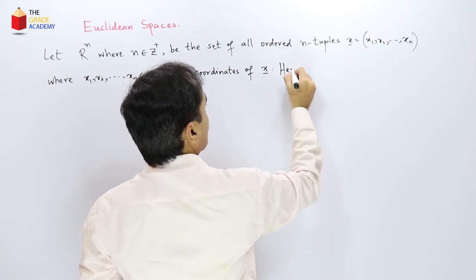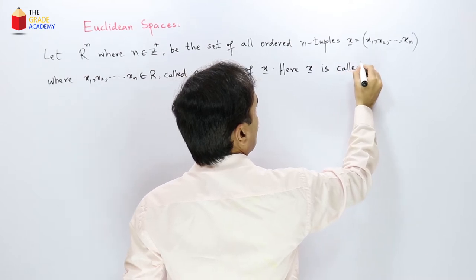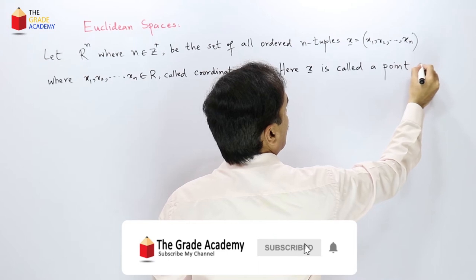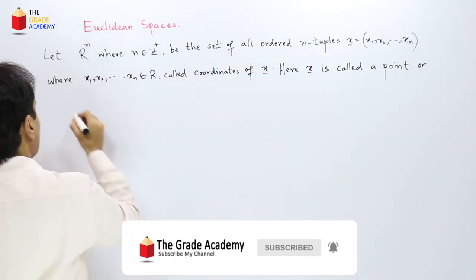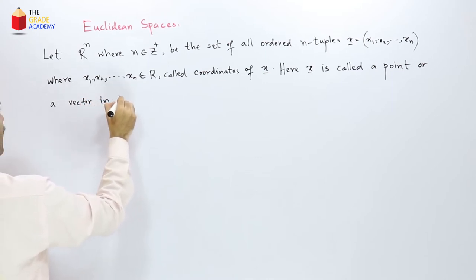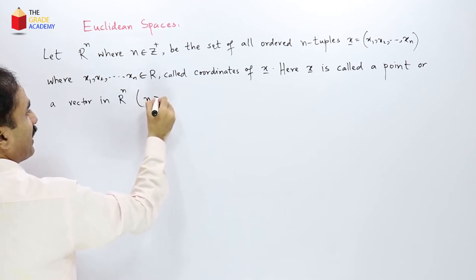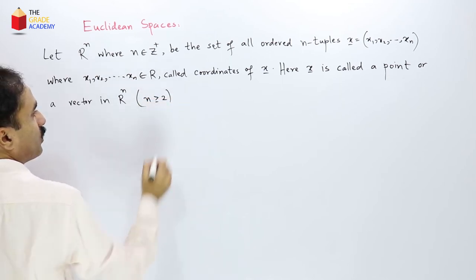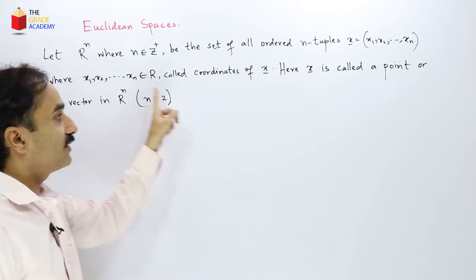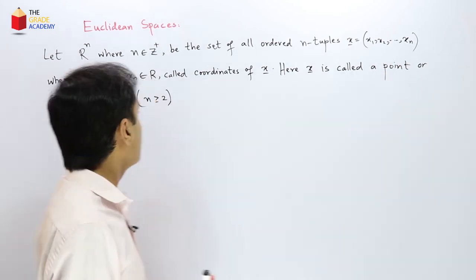So here this x is called a point or a vector in Rn. Especially when n is greater than or equal to 2. So then it is a vector. But if n is 1 in simple real number system, so it will be just a point but not a vector.